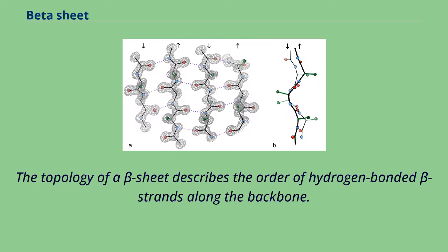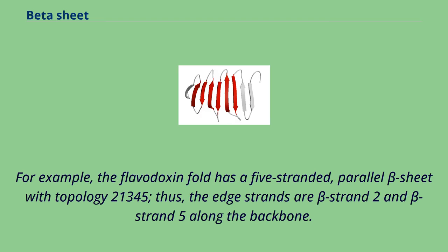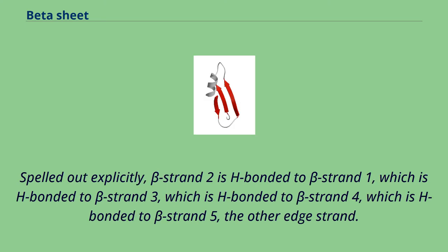The topology of a beta sheet describes the order of hydrogen-bonded beta strands along the backbone. For example, the flavodoxin fold has a five-stranded parallel beta sheet with topology 2-1-3-4-5. Thus, the edge strands are beta strand 2 and beta strand 5 along the backbone. Spelled out explicitly, beta strand 2 is H bonded to beta strand 1, which is H bonded to beta strand 3, which is H bonded to beta strand 4, which is H bonded to beta strand 5, the other edge strand.